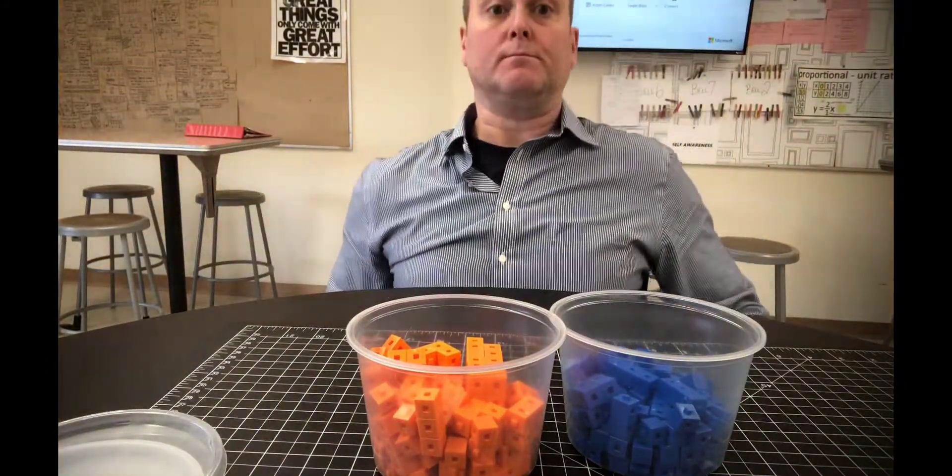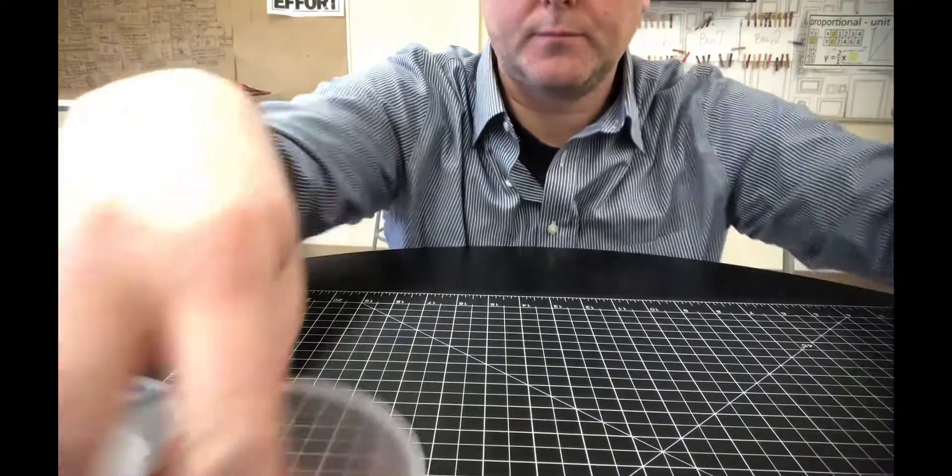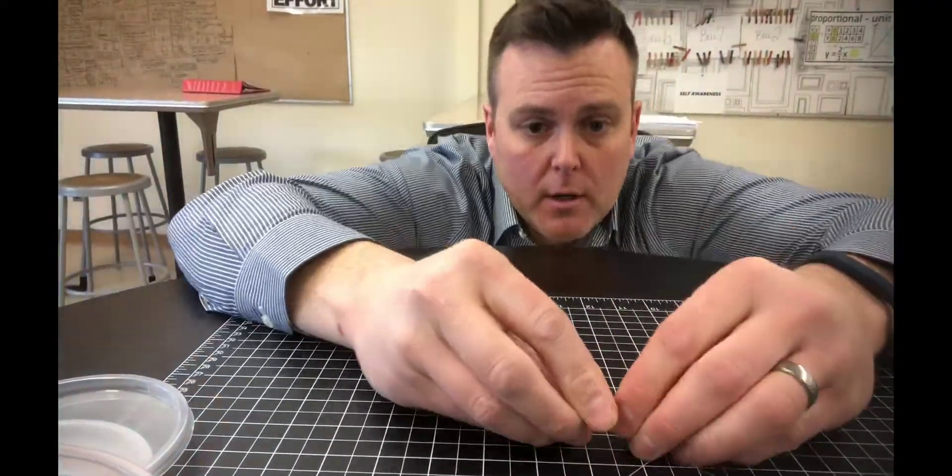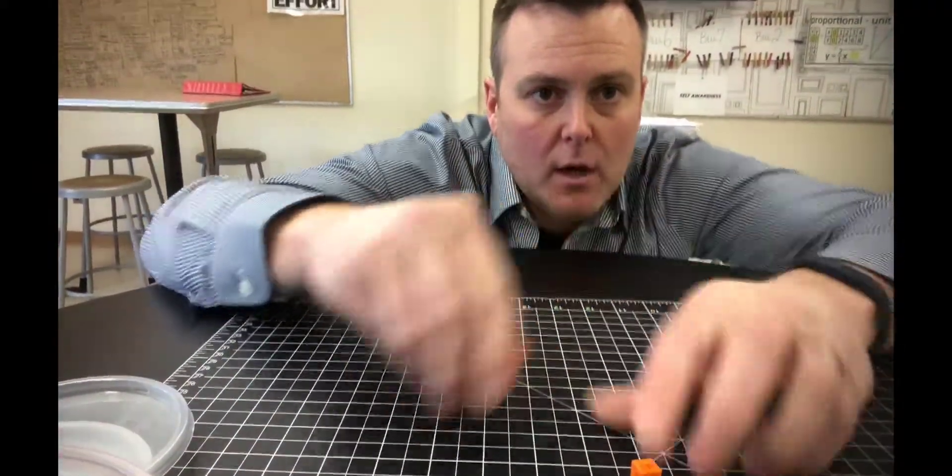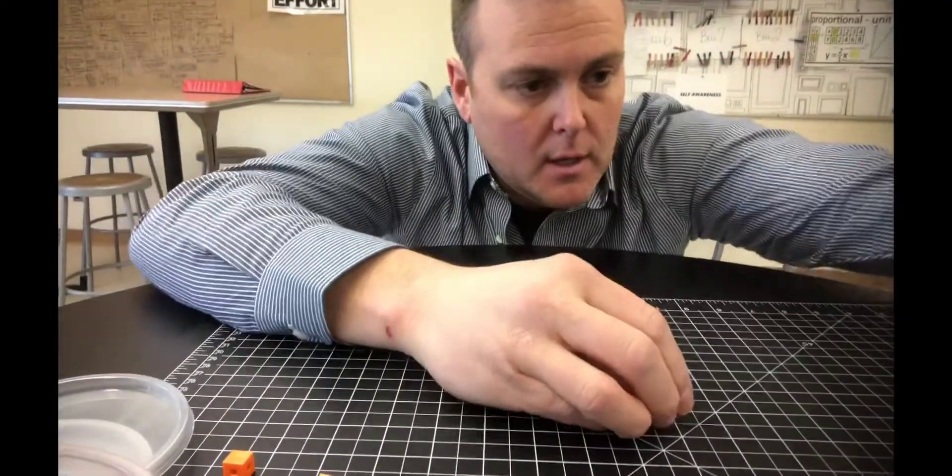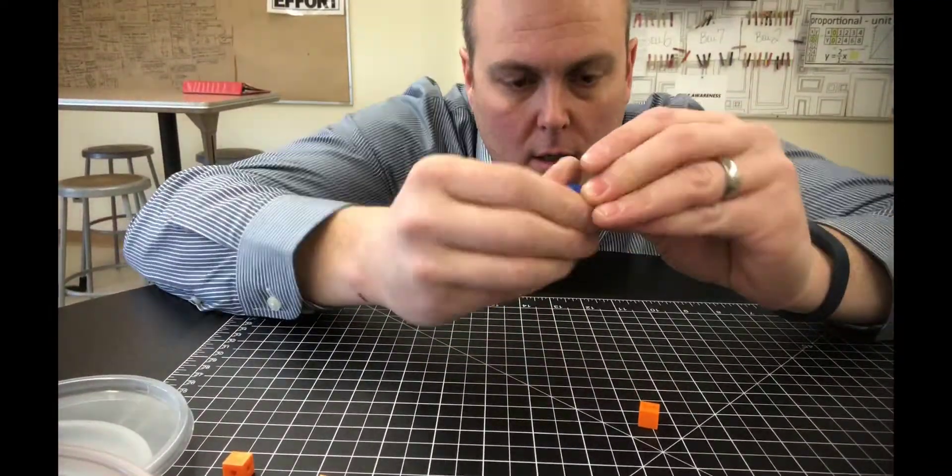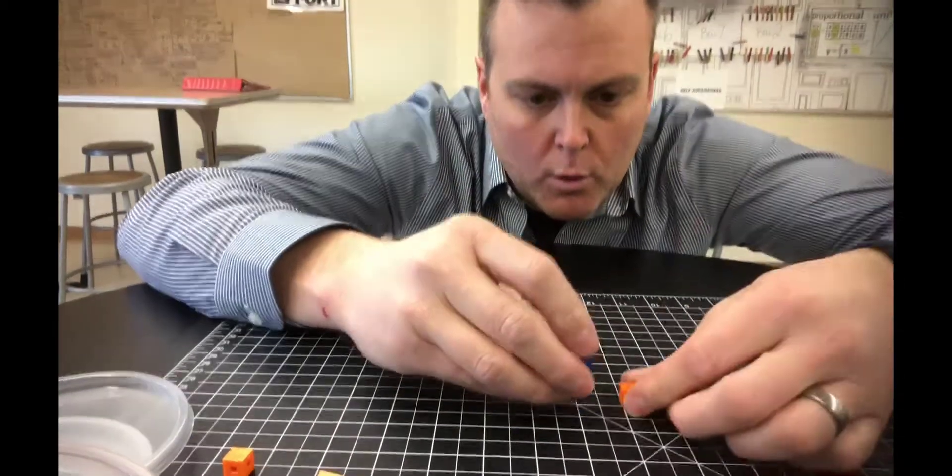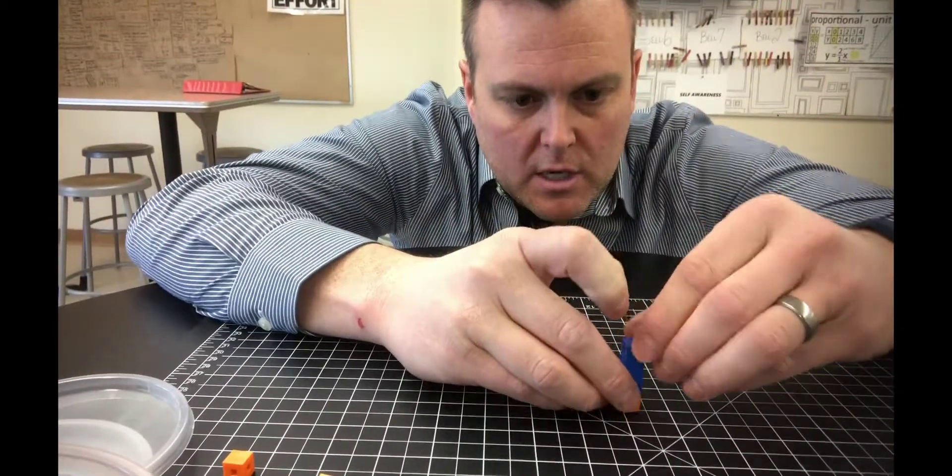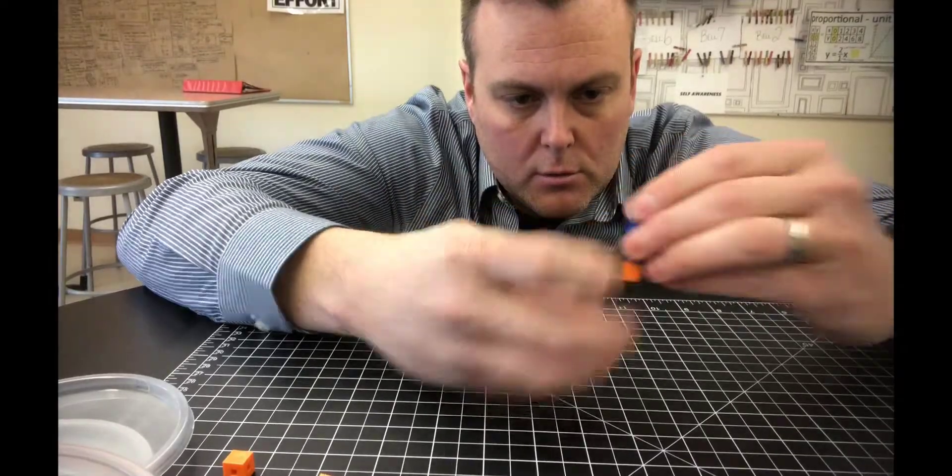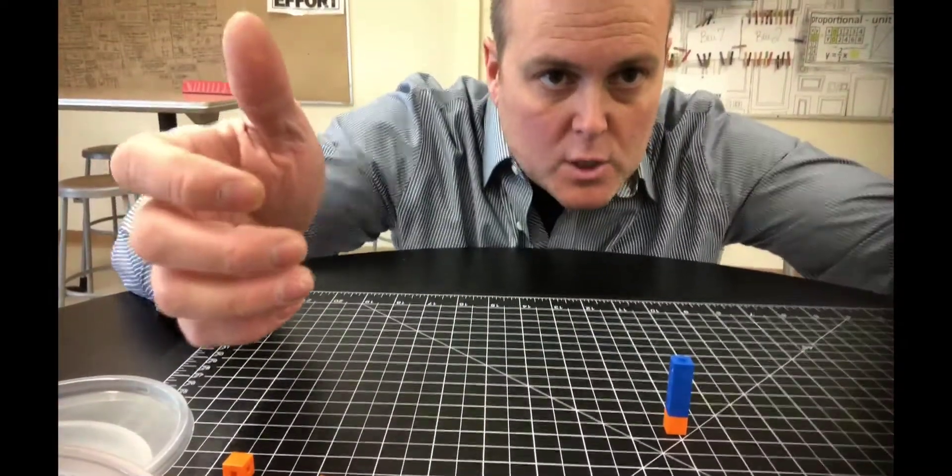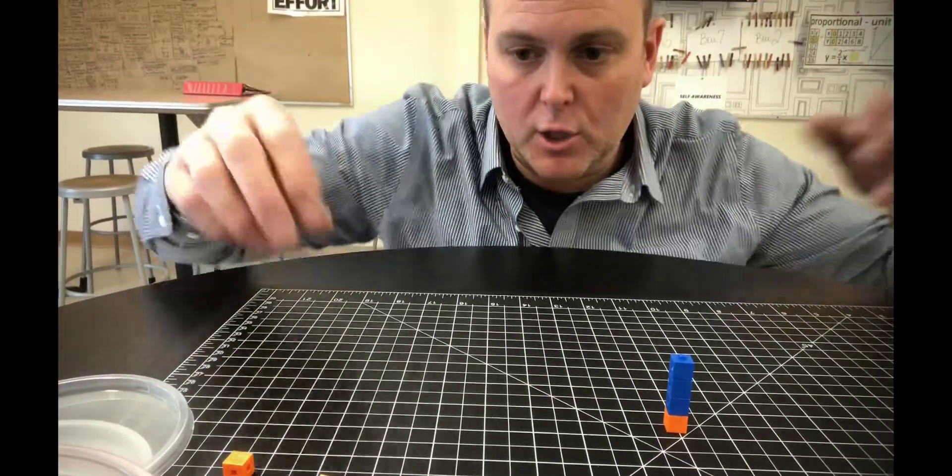So a proportional relationship for the most part is if you have a certain amount of something and then the other piece you have that same amount. So one orange is the same as or is proportional to three blue. So if I wanted to increase this relationship, what's it going to look like? What happens when I take two orange?